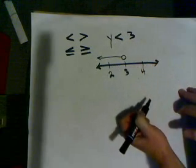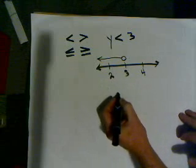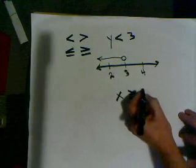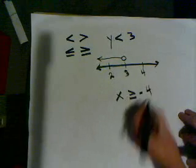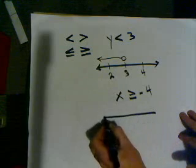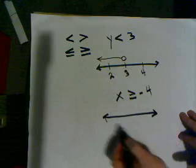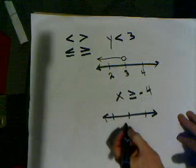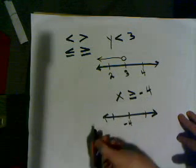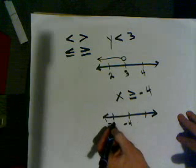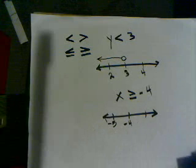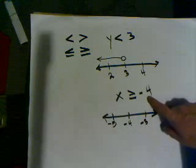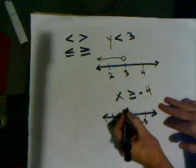Let's look at one that's got the equal to on it. Let's say we have x is greater than or equal to negative 4. To graph that, I'm going to draw my graph again here, and then the number we're working with is negative 4, so I'll put that in the middle. One less, one more. One less than negative 4 is negative 5. You're going deeper in the hole. Then here, one more would be negative 3.